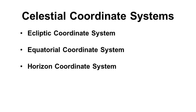There are three different celestial coordinate systems, the ecliptic coordinate system, the equatorial coordinate system and the horizon coordinate system.